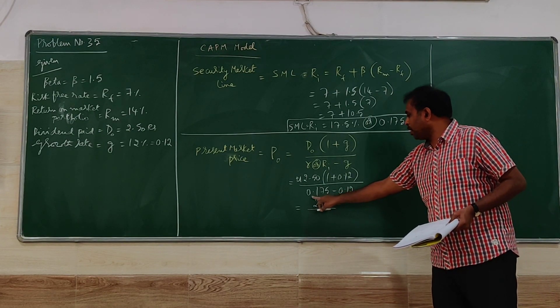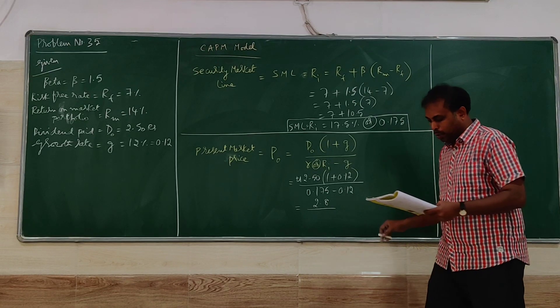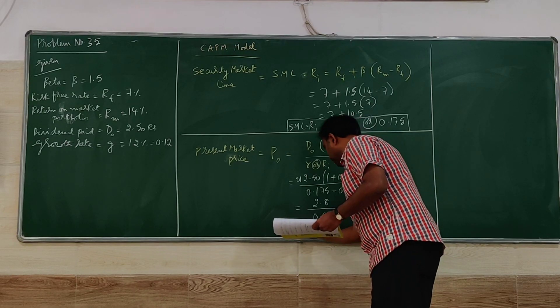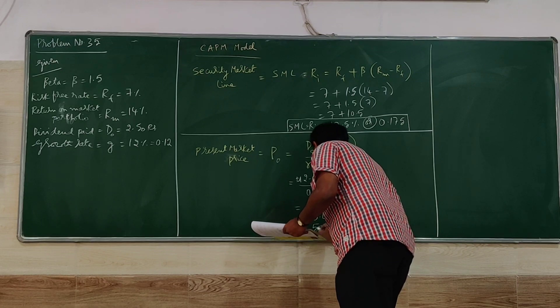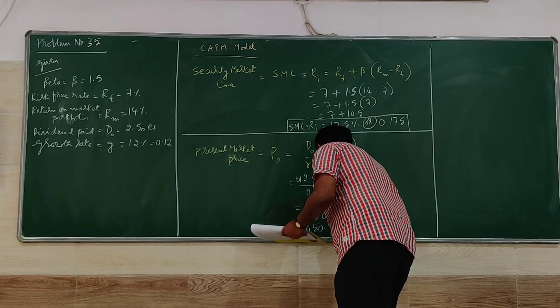Then 0.175 minus 0.12 will give 0.055. So present market price will be 50.90.